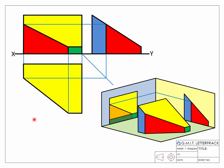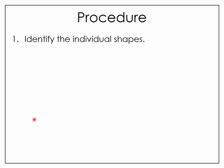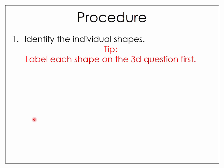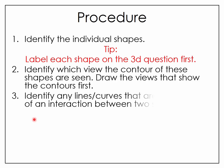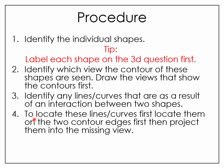We're going to look at a procedure to help us solve this type of question. First, identify the individual shapes and label them on the question — the question is generally given in 3D form. Second, work out what view you need to look at to see the contour views of the different shapes. Third, identify any lines or curves that result from the interaction of the different shapes. Lastly, locate these lines or curves on the contour view first, then bring them in to the missing view. As always, labeling the points makes life a lot easier.